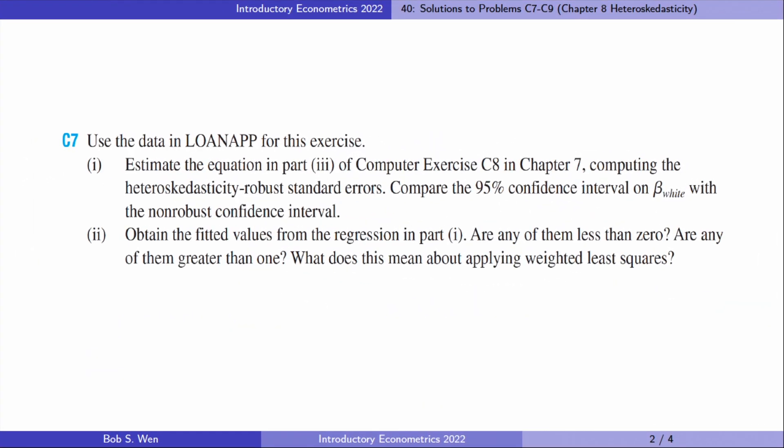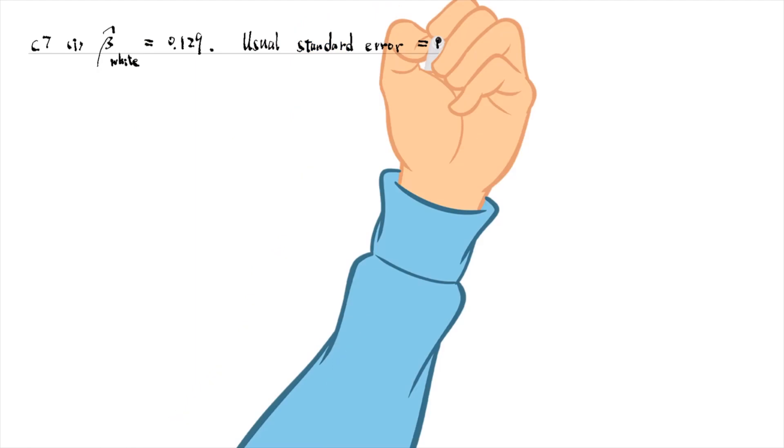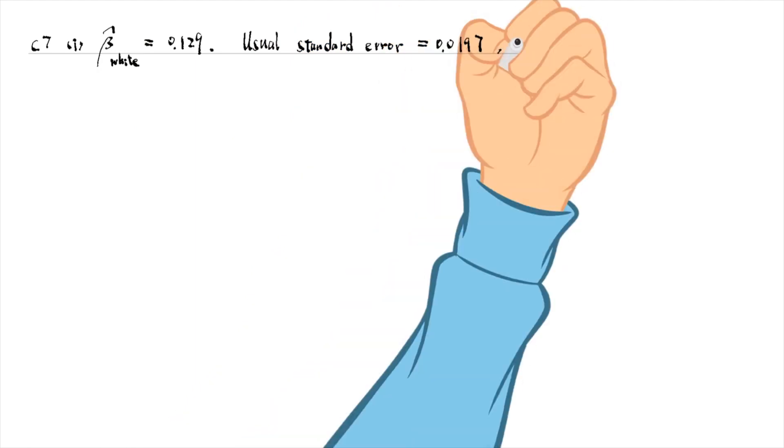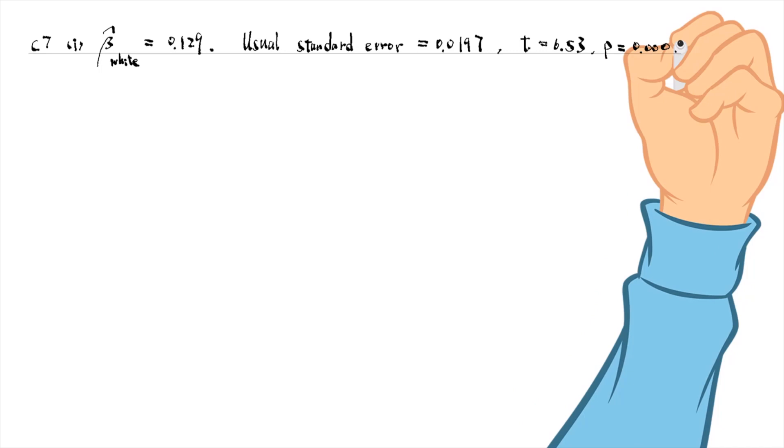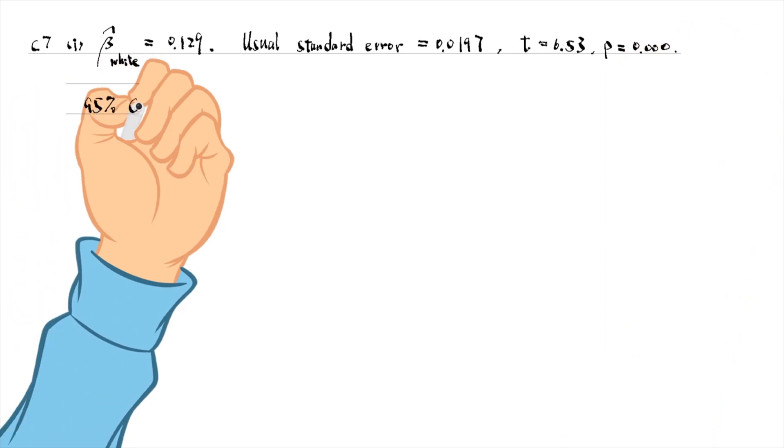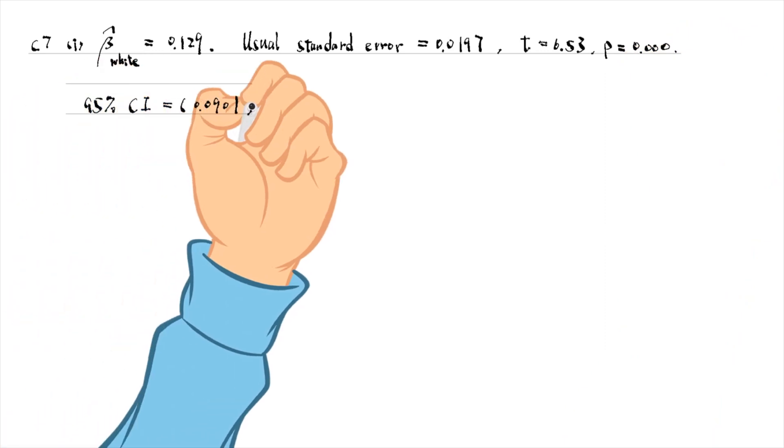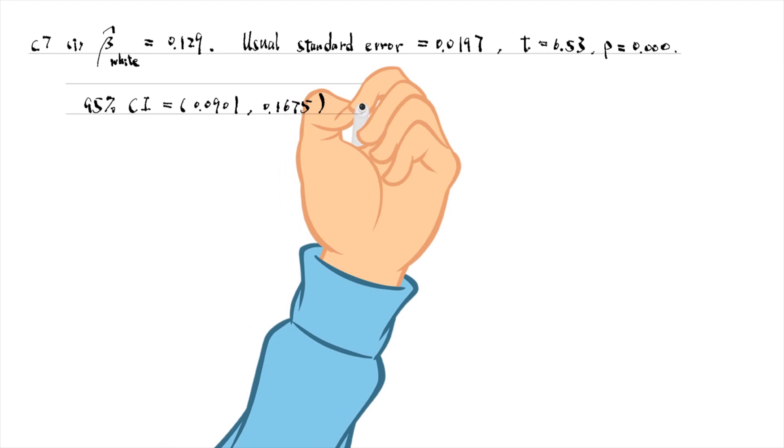For exercise 7, the OLS estimate for the dummy variable white is 0.129. The usual standard error is 0.0197. The t-statistic is 6.53 and its p-value is 0 to 3 decimal places. The 95% confidence interval is between 0.0901 and 0.1675.